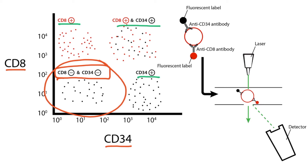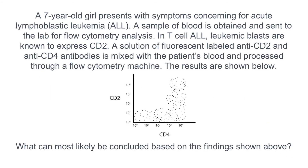Let's do a question so you can see how this can be used clinically. A seven-year-old girl presents with symptoms concerning for acute lymphoblastic leukemia. A sample of blood is obtained and sent to the lab for flow cytometry analysis. In T-cell ALL, leukemic blasts are known to express CD2. A solution of fluorescent labeled anti-CD2 and anti-CD4 antibodies is mixed with the patient's blood and processed through a flow cytometry machine. The results are shown below. What can most likely be concluded based on the findings shown above?